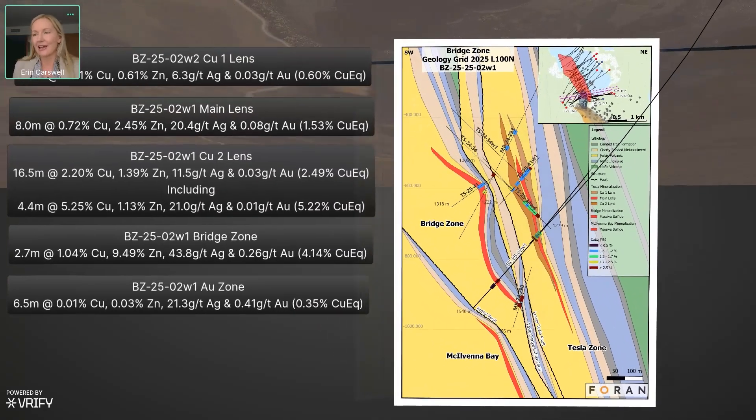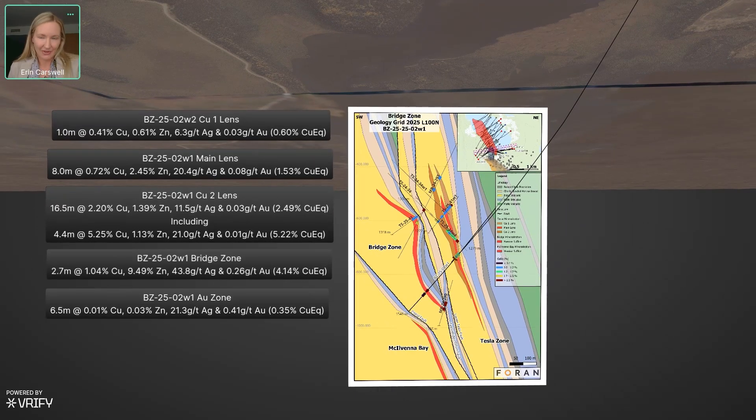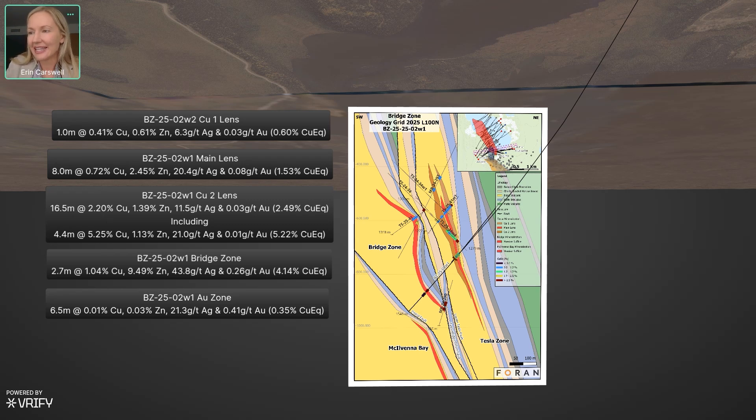They'll swing into the assays, and the cross section here. So it's this hole here that comes down through Tesla, did hit the bridge zone as well in the end, stopped just short of McElvana Bay down here. But the results from Tesla were well worth it. So once again, a meter of the copper one lens, you're sensing a theme here, sitting directly on top of eight meters of the main lens. Now, it's not as zinc rich as further to the north in Tesla here. We've got about 0.7% copper and nearly 2.5% zinc in the main lens there. But what got us really excited here was the copper two lens. So we're looking at 16.5 meters running at 2.2% copper, nearly 1.4% zinc and a little bit of silver as well.